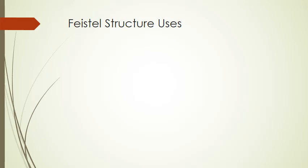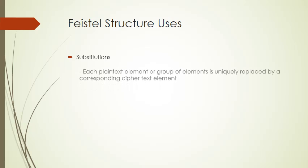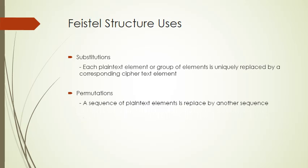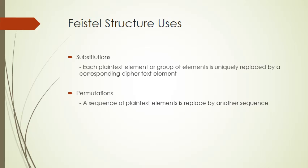Each plain text element or group of elements is uniquely replaced by a corresponding cipher text element or group of elements. Permutation: a sequence of plain text elements is replaced by a permutation of that sequence — no elements are added, deleted, or replaced; rather, the order in which the elements appear in the sequence is changed.